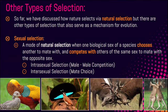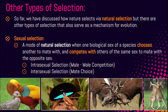There are other types of selection. So far we've talked about how nature selects via natural selection, but there are also other types of selection that serve as a mechanism for evolution. Sexual selection is a mode of natural selection when one biological sex of a species chooses another to mate with and competes with others of the same sex to mate with the opposite sex. There is intrasexual selection and intersexual selection.